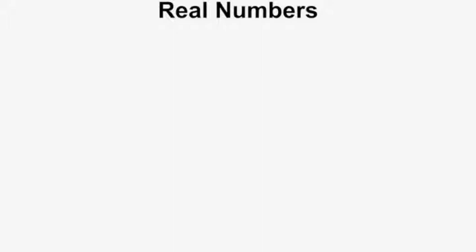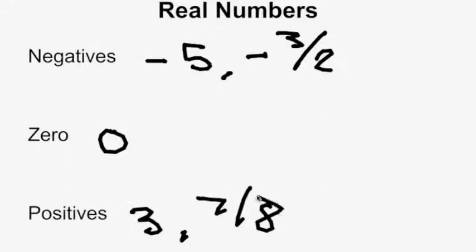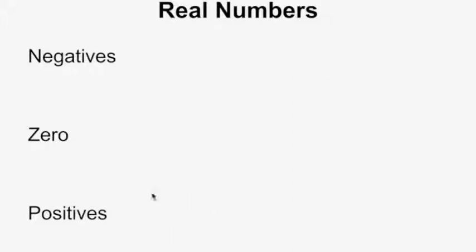You have real and imaginary numbers. And real numbers can be broken down further. So first you have negative numbers, 0, and positive numbers. Negative 5, negative 3 halves, 0 is obviously 0, and positives, you'll have the opposites of the negatives, so 3 and 7 eighths. And those are your breakdown of the real numbers.